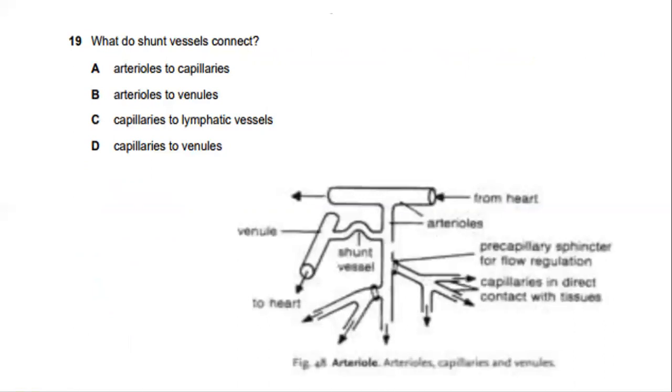And question number 19 is, what do shunt vessels connect? If you can see from this diagram, this is a shunt vessel. These are venules. This is arterioles. So the answer for this, this is the blood flow from the heart. And pre-capillary sphincter for flow regulation. Pre-capillaries in direct contact with tissues. So from this, we know the answer is B, arterioles to venules.